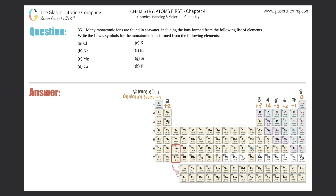Number 35. Most monatomic ions are found in seawater, including the ions formed from the following list of elements. Write the Lewis symbols for the monatomic ions formed from the following elements. And then we have A through H.